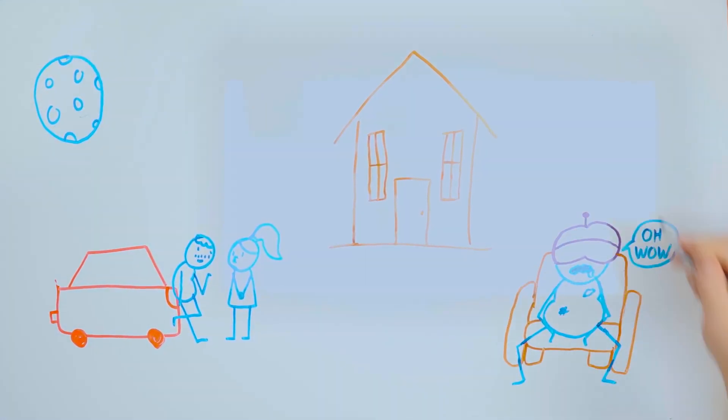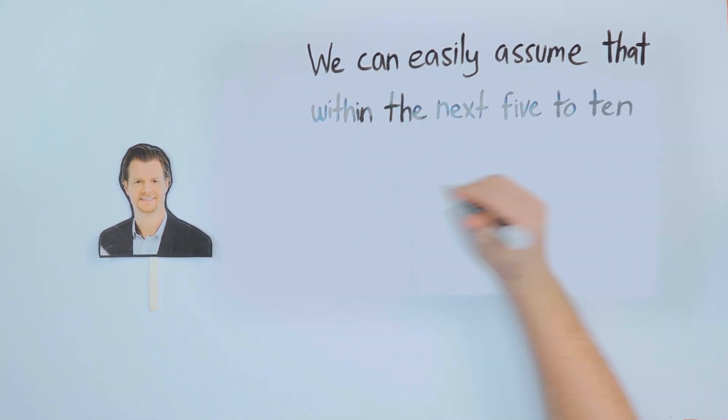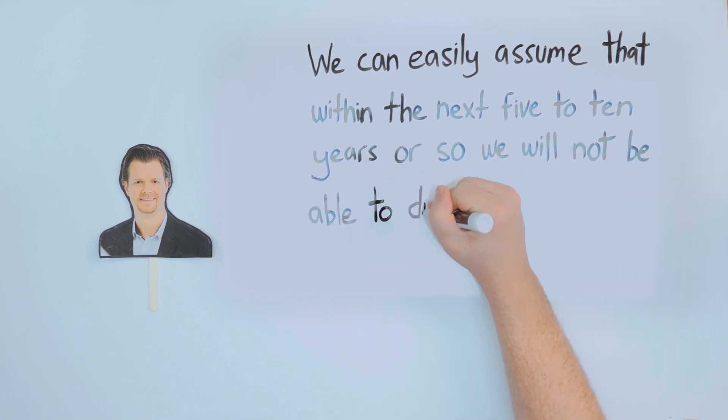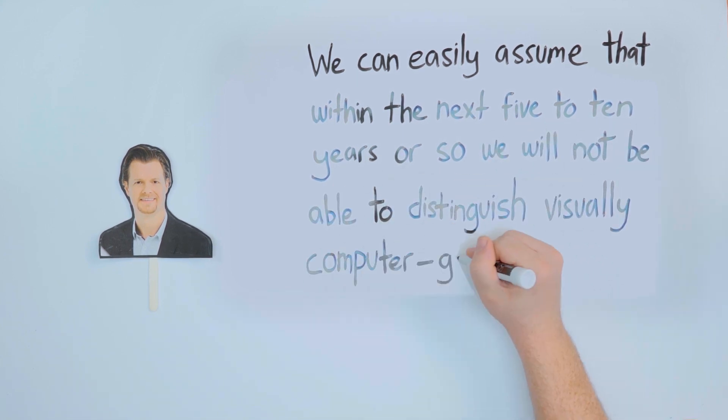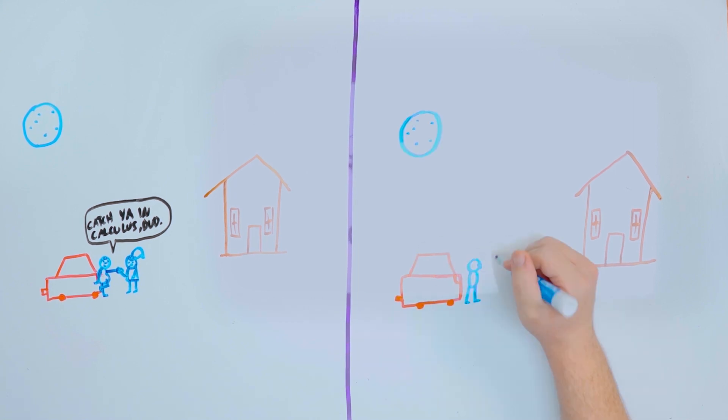So while redoing your awkward teen years in the matrix isn't possible right now, it's absolutely a possibility in the near future. According to Frank Steinicke, a computer scientist from the University of Hamburg, we can easily assume that within the next 5 to 10 years or so, we will not be able to distinguish visually computer-generated content from real-world content anymore. And if you've survived the 10 years since a horrible prom night mishap, what's 10 more years to digitally redeem yourself?